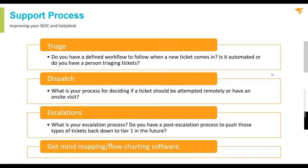An important part of escalations is having a post-escalation process to push those tickets that were escalated from Tier 1 and Tier 2 back down, so they can be handled by Tier 1 or Tier 2 in the future. One of the ways you gain efficiencies is to make sure tickets can be handled at lower tiers. Especially right now, when you have extra time, create that post-escalation process and use it to train your Tier 1 people.